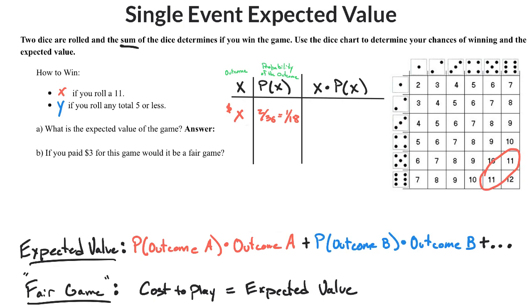Or you could win Y dollars if you roll any total of 5 or less. That means 5 counts, and any number less than it counts — so the 5s, 4s, 3s, and 2s. You count all those up: there are 10 ways that that can happen. So that means there are 10 out of 36, which can be reduced to 5 out of 18.